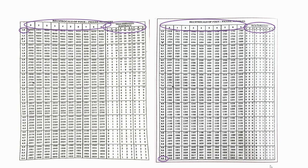One more thing to remember while using the reciprocal table is that the given table starts from 1.0 and ends at 10. So this reciprocal table is applicable for finding the reciprocal of a number between 1 and 10. So what happens if the given number is greater than 10? Let's understand how to find the reciprocal of a number greater than 10.